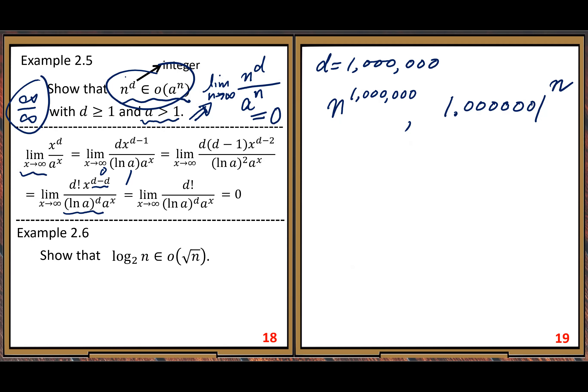This time log base 2 of n belongs to little o of root n, square root of n.